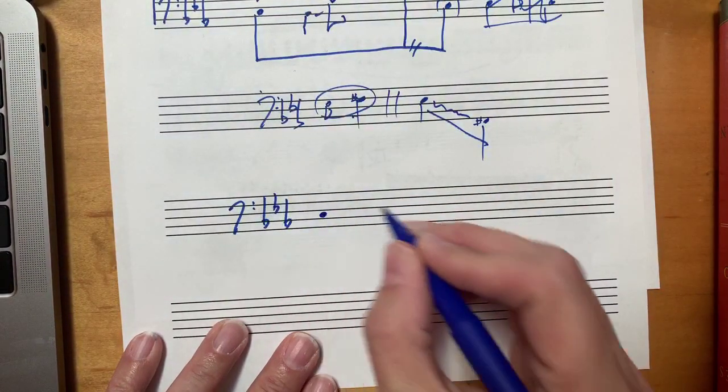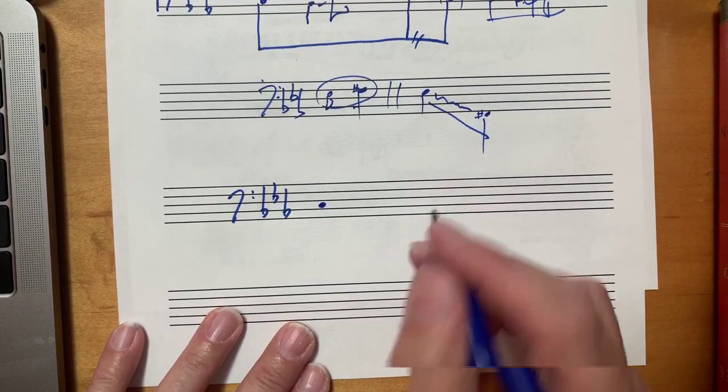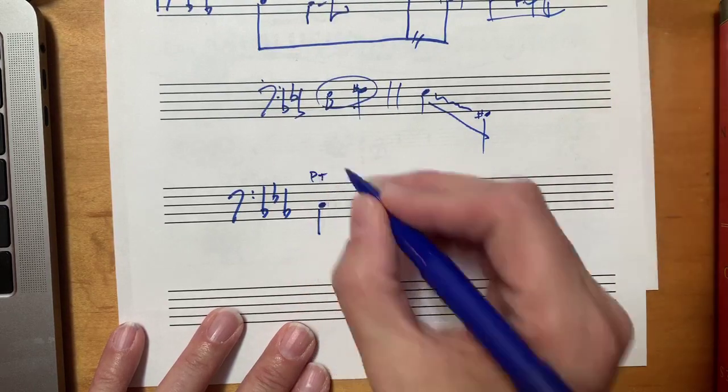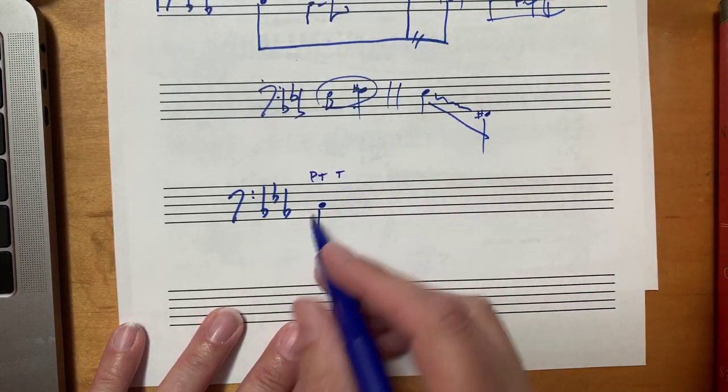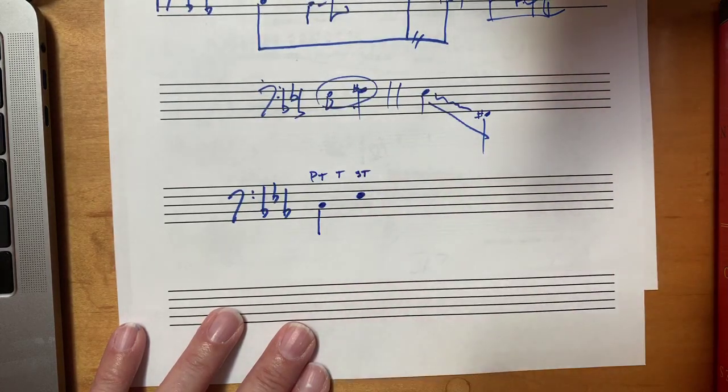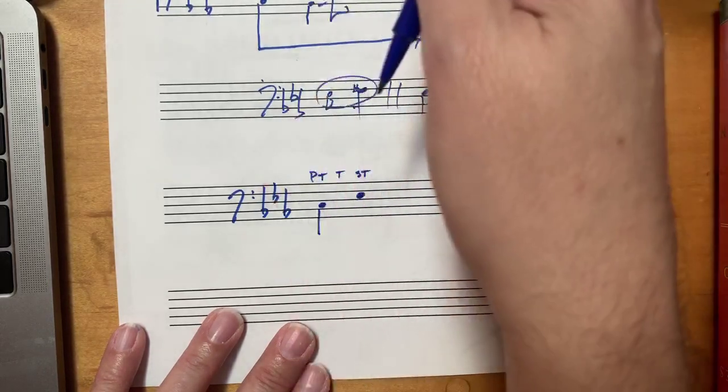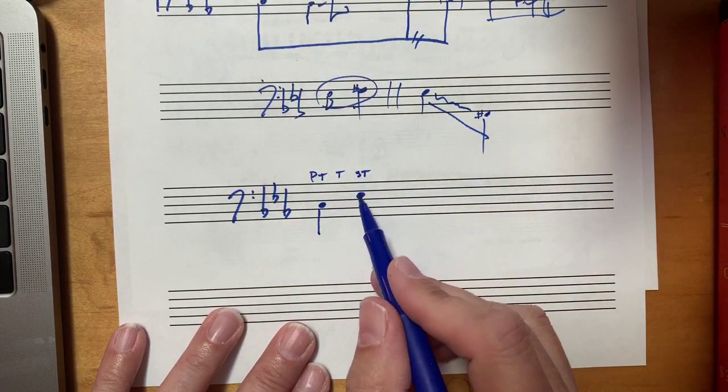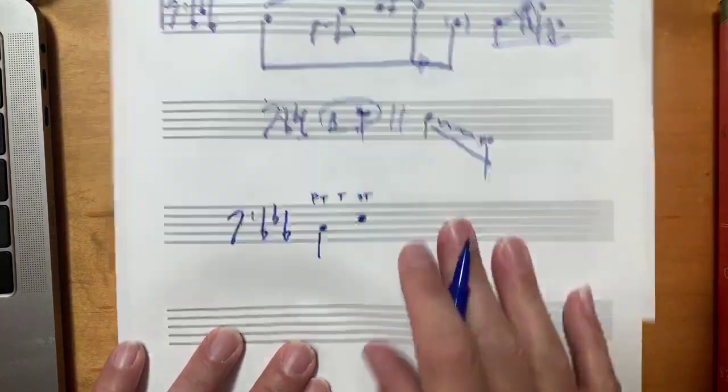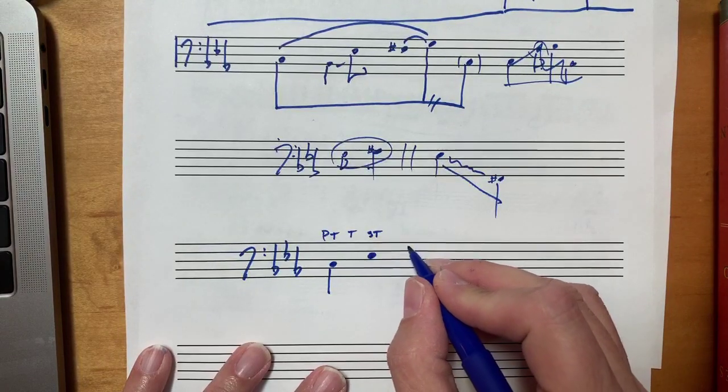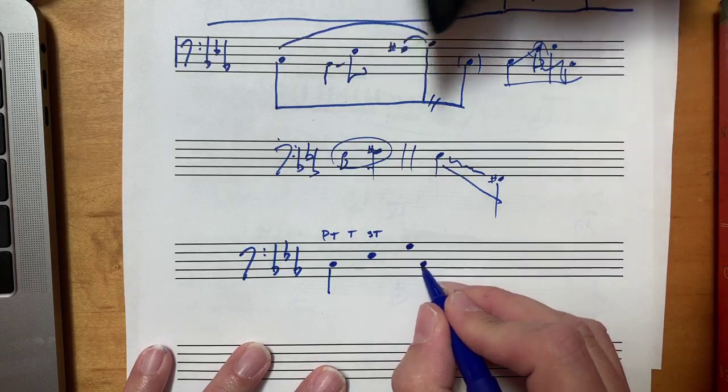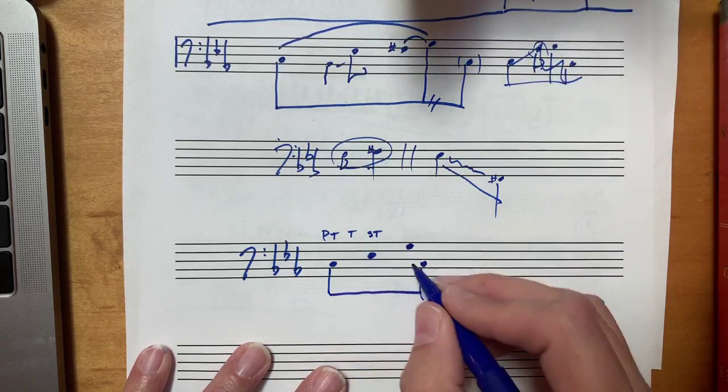When you have a sonata form in a minor key, usually what you have is the primary theme is in tonic. Then you get a transition, which takes you to the relative major for the secondary theme or secondary key center, which carries you through the exposition.